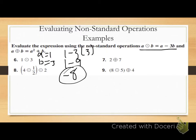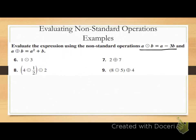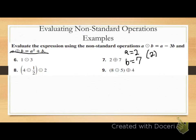Let's look at number 7: 2 circle-plus 7. Now I'm using my second operation — a squared plus b. a value is 2, b value is 7. I'm doing 2 squared plus 7. 2 squared gives me 4. 4 plus 7 gives me 11. Once you plug in, you're just evaluating your expressions using your order of operations.